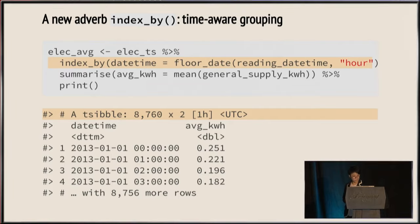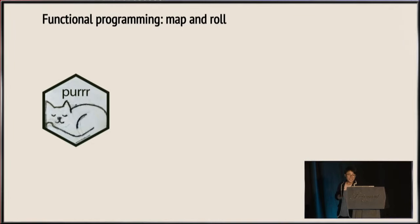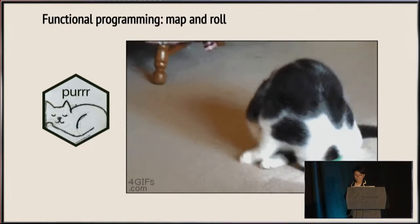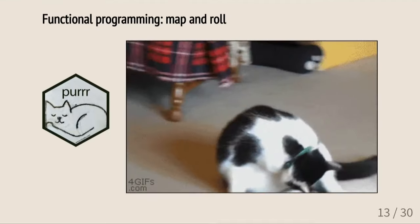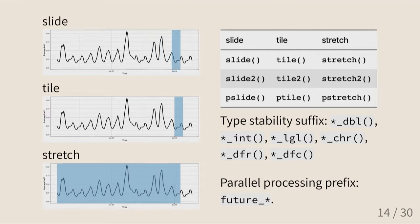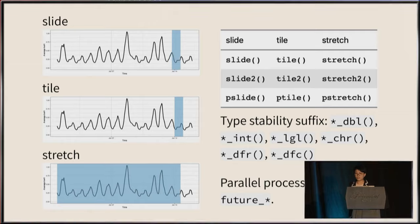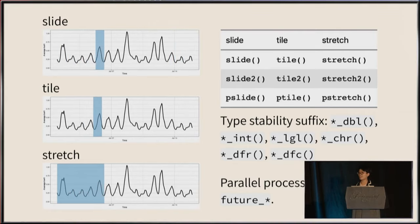Another key operation for time series is rolling windows. It not only iterates over each element like purrr::map does, but also needs to roll. There are three different types of rolling operations: sliding, tiling, and stretching. Like purrr, slide takes one input, slide2 takes two inputs, and pslide for multiple. If you have a data frame to roll by observations, use pslide. For type stability, they return a list, with variants for integers, characters, logicals, etc.